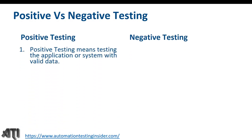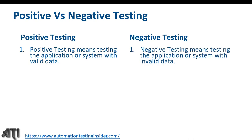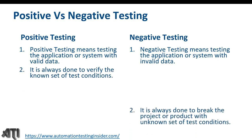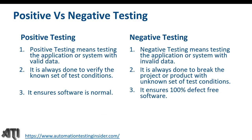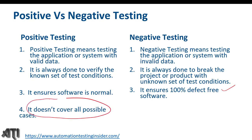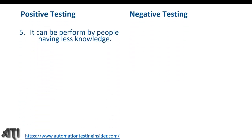Positive testing tests the application with valid data; negative testing tests with invalid data. Positive testing is done to verify a known set of test conditions; negative testing is done to break the product with unknown test conditions. Positive testing ensures normal software behavior; negative testing ensures 100 percent defect-free software by covering all possible cases and scenarios.